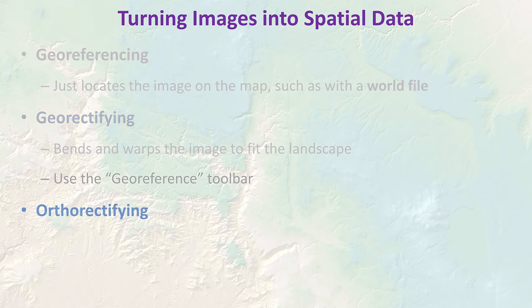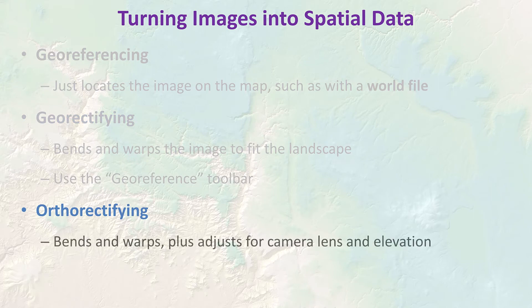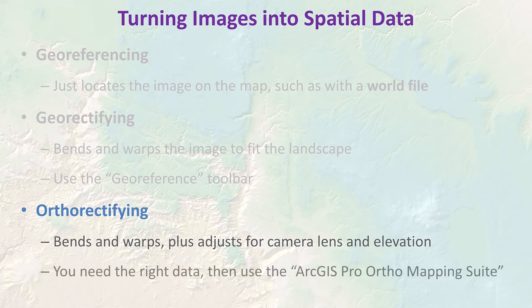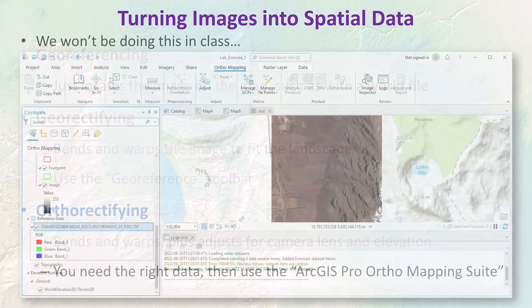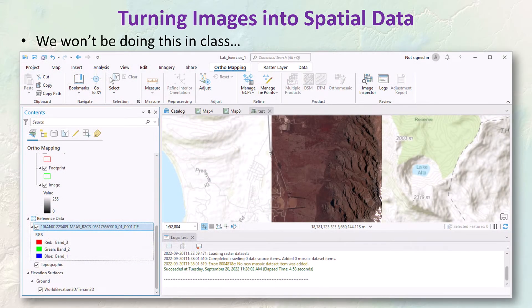The most complex method is ortho-rectifying, which bends and warps the image the same way geo-rectifying does, but can also adjust for characteristics of the camera lens and drape the image properly over a DEM. Ortho-rectification requires data specifically designed for it — you don't get this from a simple image file. Once you have the right data, you can use the ArcGIS Pro ortho mapping suite. But we won't be doing ortho-rectification in class since we don't have the required data. We'll stick with geo-rectifying.